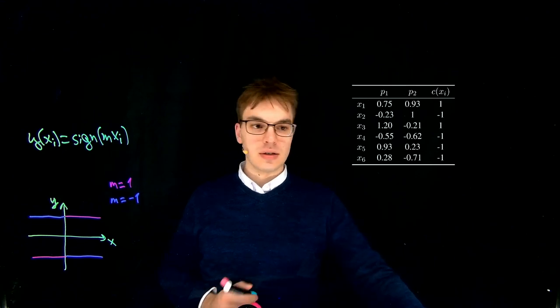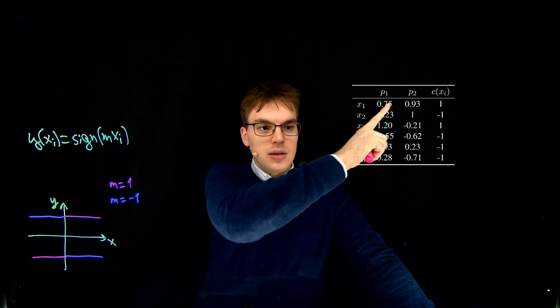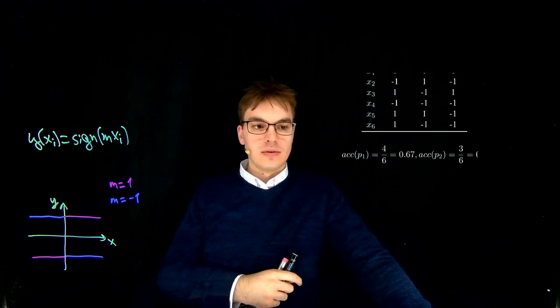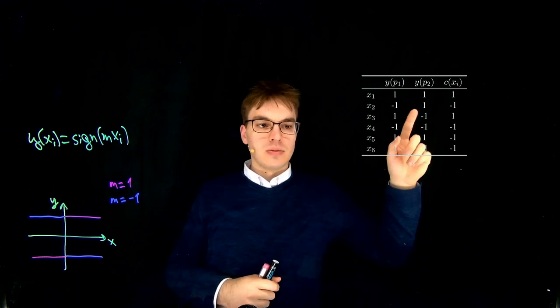So let's have a look at how this becomes. So the first value should be 1, 1, minus 1, 1, and so on. Let's have a look. Here we actually have it, 1, 1, minus 1, 1.